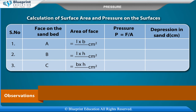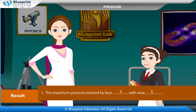Calculation of surface area and pressure on each surface: Face A on the sand bed — area equals L into B cm²; Face B — area equals L into H cm²; Face C — area equals B into H cm². Pressure P equals F by A; and the depression in sand D is recorded in centimeters for each face.